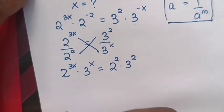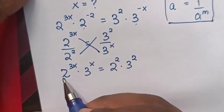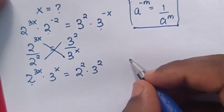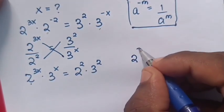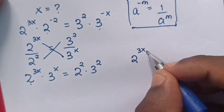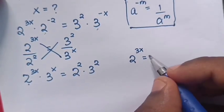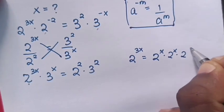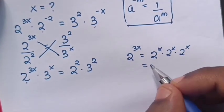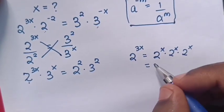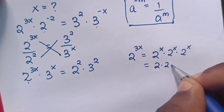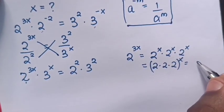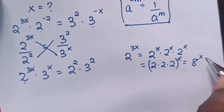From here, 2 power 3x is the same as 2 power x times 2 power x times 2 power x, which is equals to 2 times 2 times 2, all in bracket power x. So it will be 8 power x.